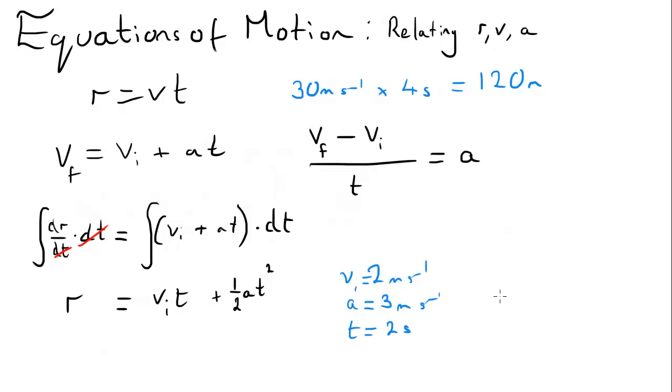So if we do all the maths, and just input this in, we've got 2 times 2, plus a half times 3 times 2 squared. And this equals 4 add 6. So this is 10 metres.